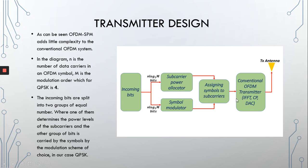After that, the modulated symbols would go through the conventional OFDM transmission process into the antenna. In OFDM-SPM, however, we have two blocks for modulation in parallel — consequently, we also get two streams of data instead of one, which is a great gain.